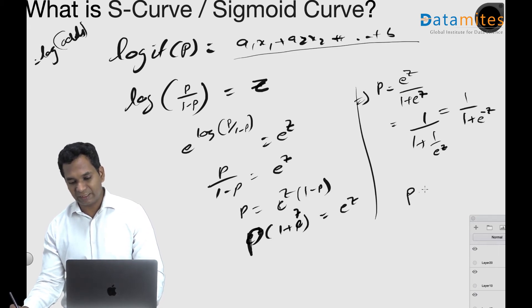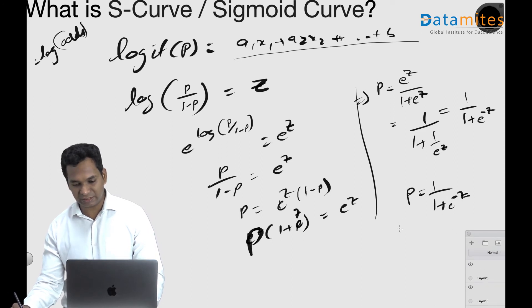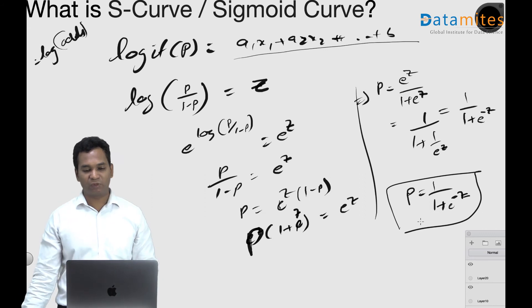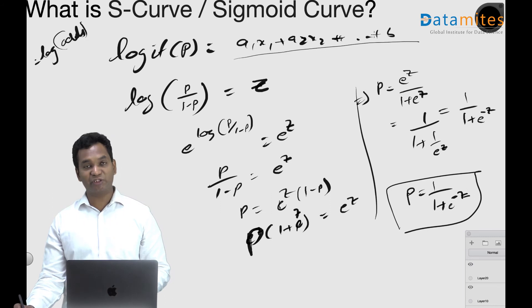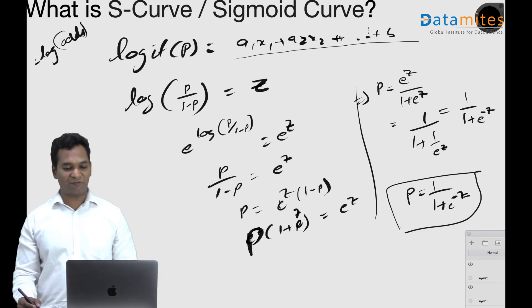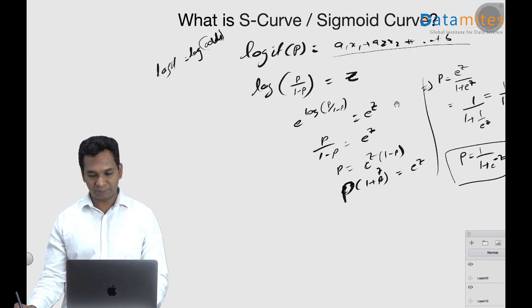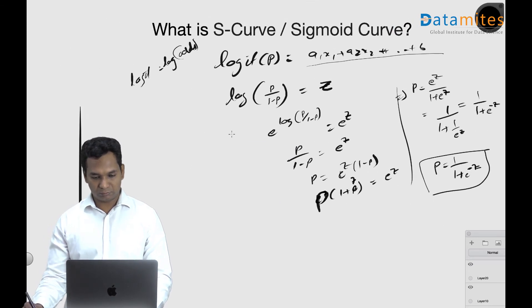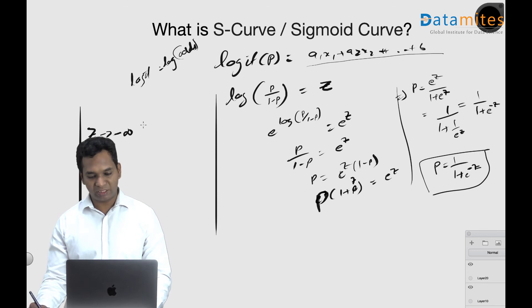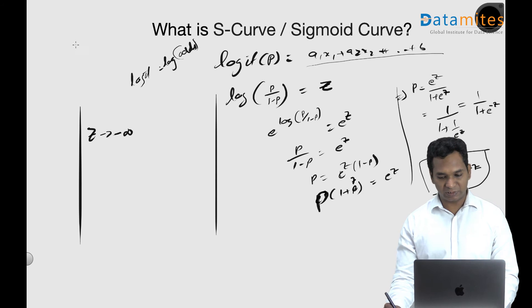This is your sigmoid function. So if you look at this, when z tends to, because z is a linear equation it can go from minus infinity to plus infinity.